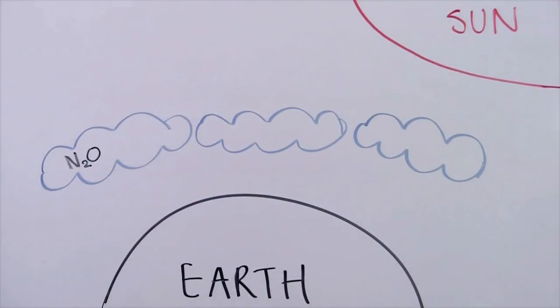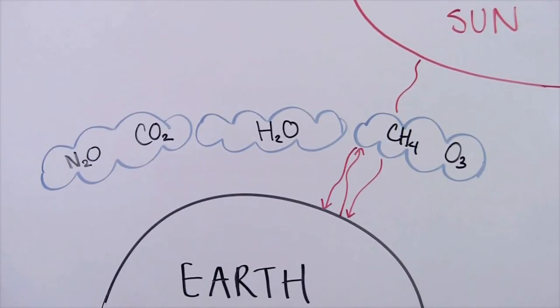Greenhouse gases are gases in the atmosphere that have the ability to absorb and emit radiation, and are responsible for the habitable climate on Earth we have today.